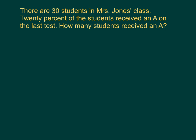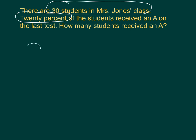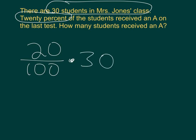This question asks you to find how many students received an A if there are 30 students in Mrs. Jones' class and 20% of them received an A. When you're trying to find the percent of a number, you just multiply the percent — in this case 20% — times that number. 20% of 30 is 6. So, 6 students received an A. Any time you need to find the percent of a number, just multiply the percent times the number.